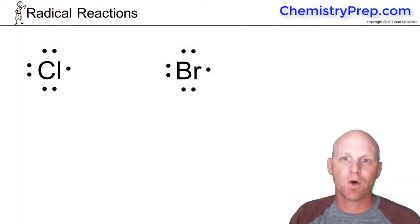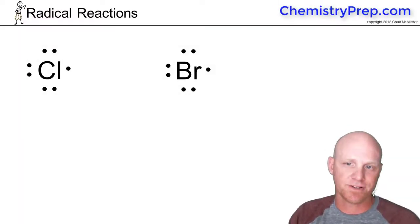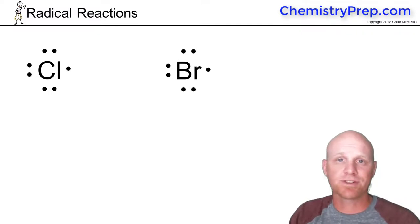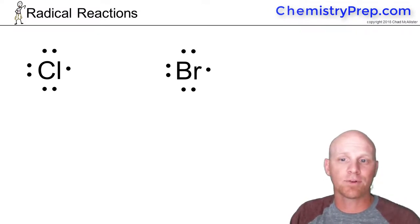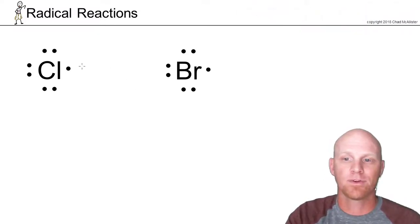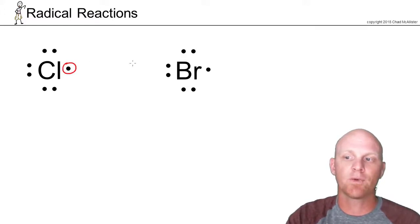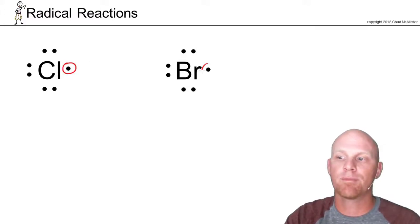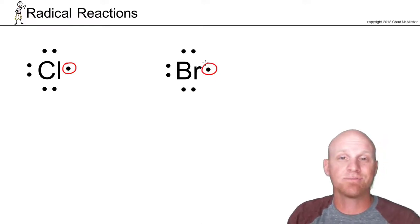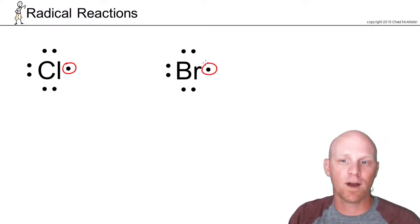This next chapter is all about radical reactions. A radical reaction, simply put, is any chemical reaction involving a radical as an intermediate. Two of the big ones we'll look at involve either a chlorine radical or a bromine radical as one of the intermediate species. A radical just means it has an unpaired electron somewhere.